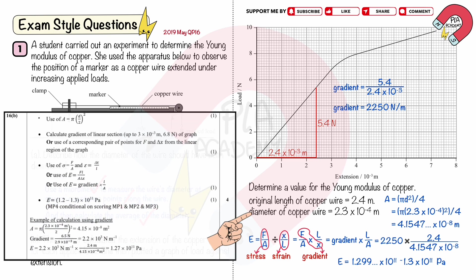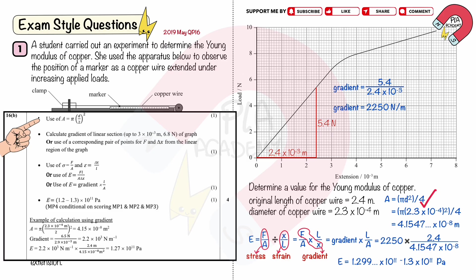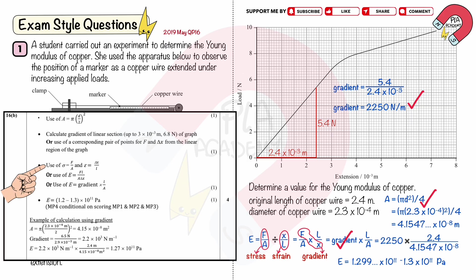You will get four marks for: using the equation A equals pi times (d/2) squared; calculating the gradient of the linear section up to 3 × 10⁻³ meters and 6.8 newtons; using the equation of stress and strain or Young's modulus; and a correct value of Young's modulus in the range of 1.2 to 1.3 × 10¹¹ pascals.